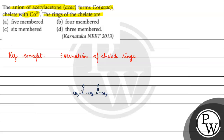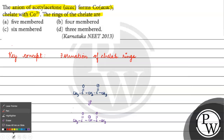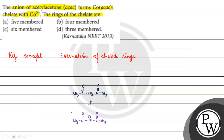What does our ligand look like? It's the anion form. So the structure becomes: CH₃-CO-CH⁻-CO-CH₃ — that's the anion of acetyl acetone. This will become our ligand.